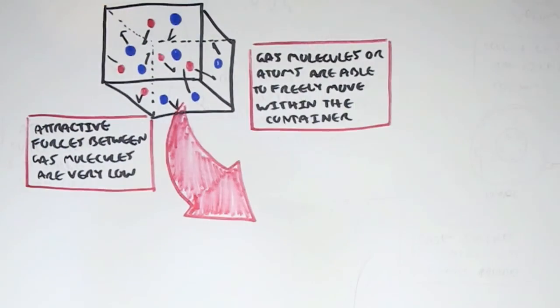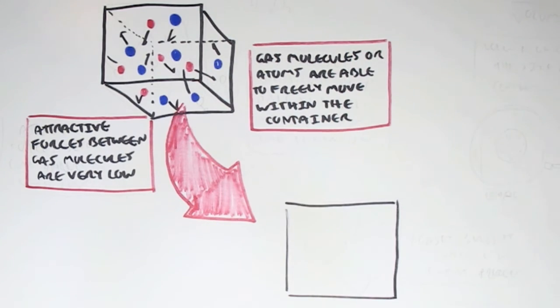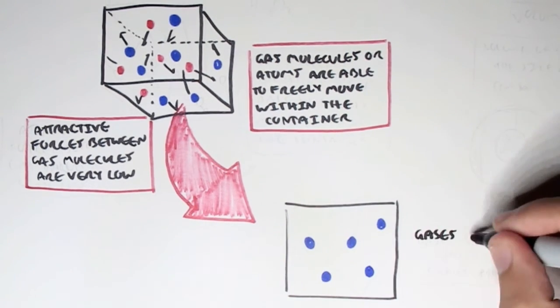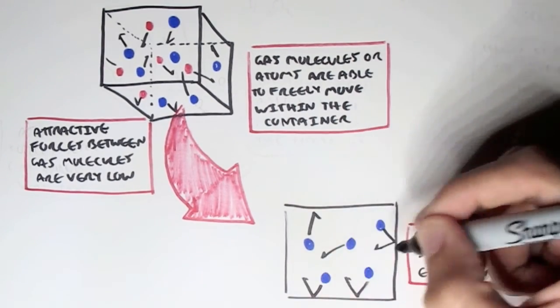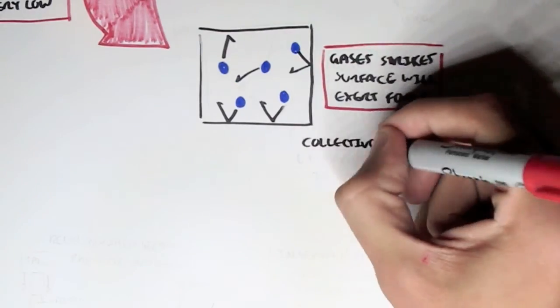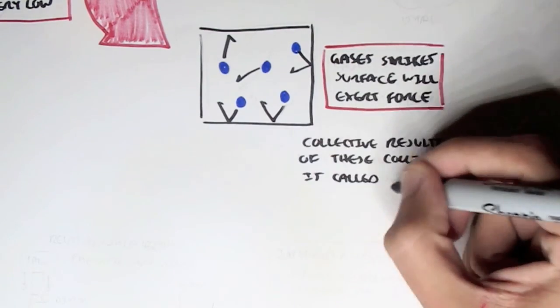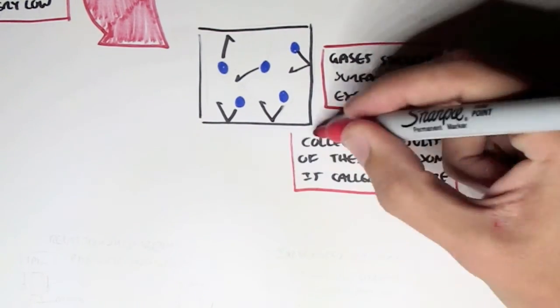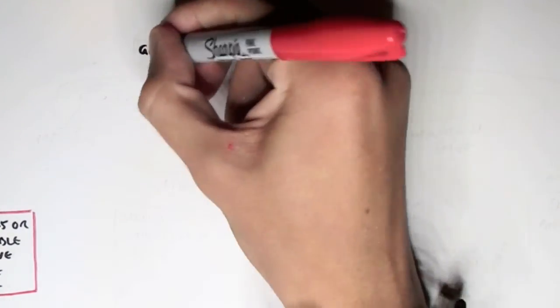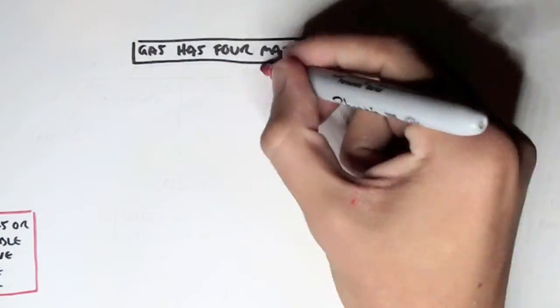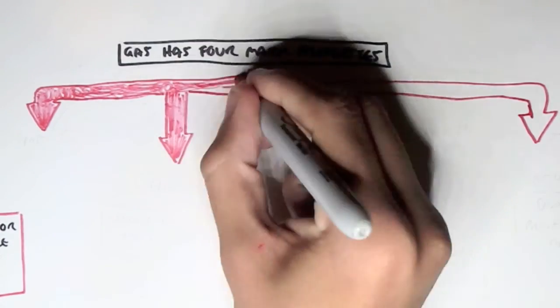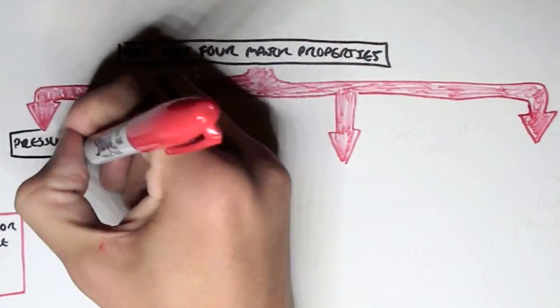Let's have another container, this time with just one type of gas particle. Gases strike surfaces, which will then exert force. Gas within a container will strike the surface therein and will exert some form of force. And this collective result of these collisions is called pressure. So gas has four major properties, one of which is pressure — when the gases strike surfaces, it will exert pressure.